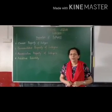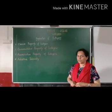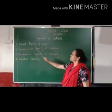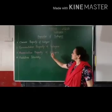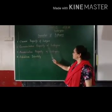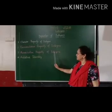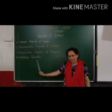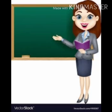Children, we have learned 4 properties of integers: closure property of integers, commutative property of integers, associative property of integers, and additive identity. I hope you all understood the properties of integers that we learned today. You can also replay this video to understand clearly. Work out sums from exercise 1.2.